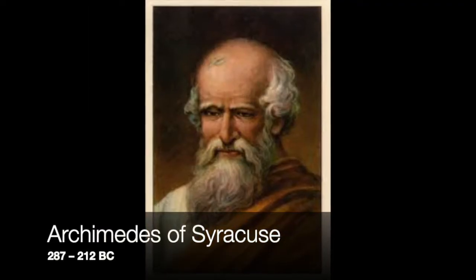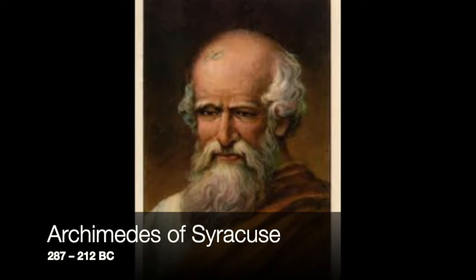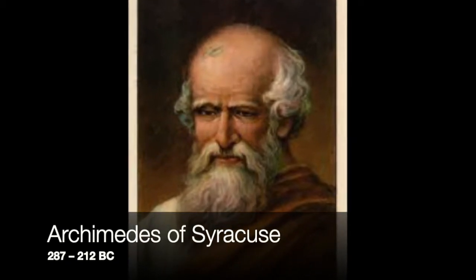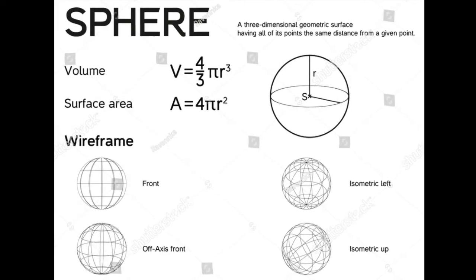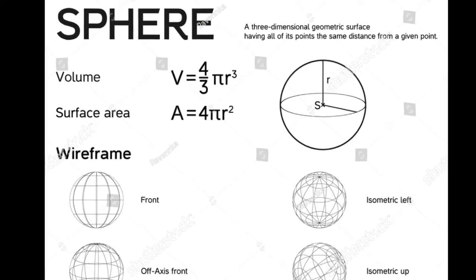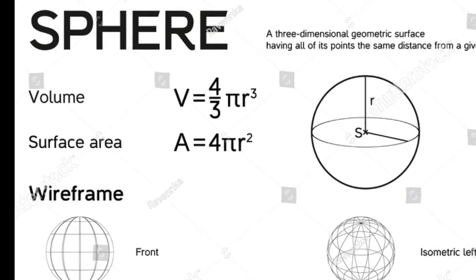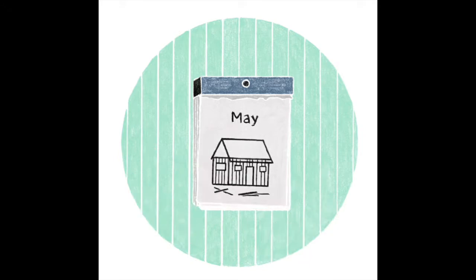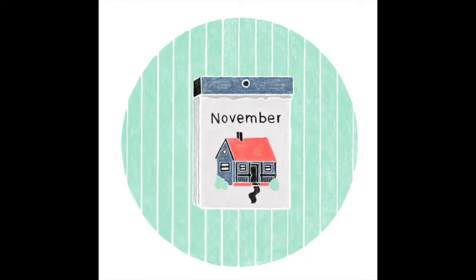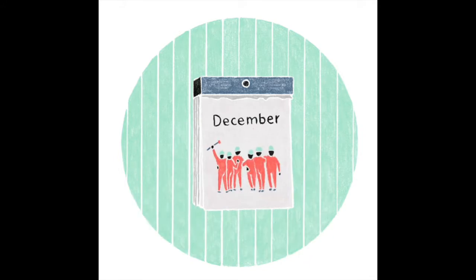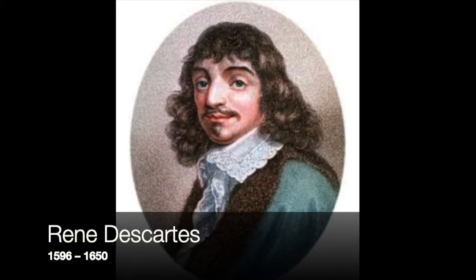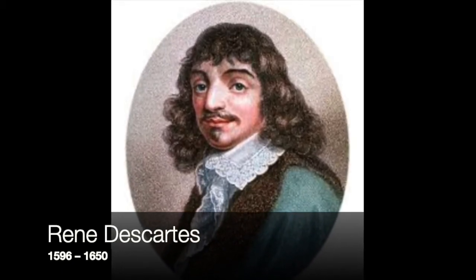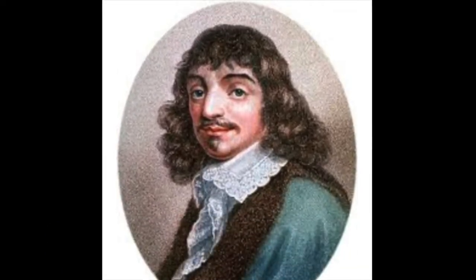Archimedes of Syracuse, considered the greatest Greek mathematician, proved a range of geometrical theorems including the area of a circle, the surface area and volume of a sphere, and the area under a parabola. After Archimedes, there wasn't a great development in geometry until René Descartes, who combined algebra and geometry to create analytic geometry, or coordinate geometry.